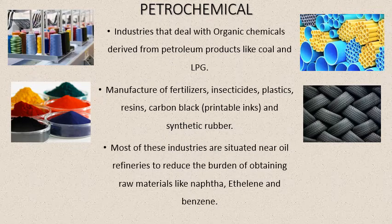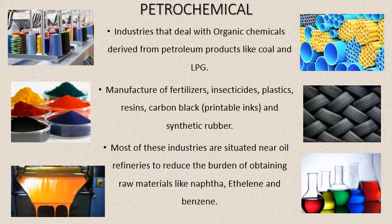Petrochemical manufacture includes fertilizers at 60 sites, pesticides, resins, carbon black, printable inks, and synthetic rubber. You can see pictures of synthetic fiber, plastics, synthetic colors — nowadays there are millions of colors in the clothing industry created using inorganic compounds and petrochemicals — and synthetic rubber used for tires. Most of these industries are situated near oil refineries to reduce the burden of obtaining raw materials like naphtha, ethylene, and benzene, which are taken from petroleum refineries where crude oil and natural gas are processed.